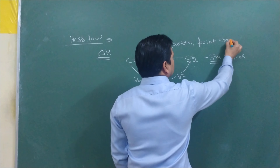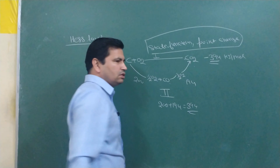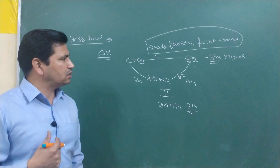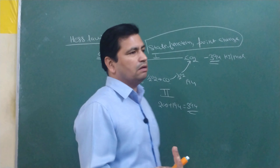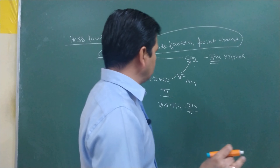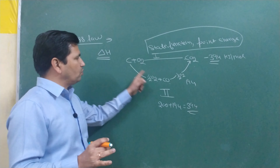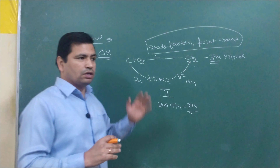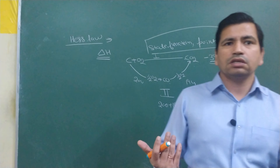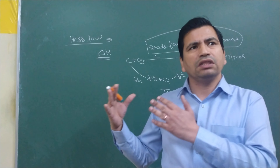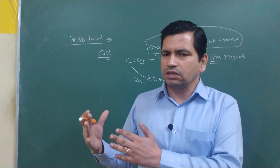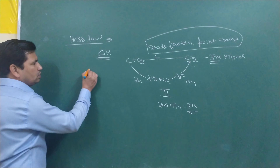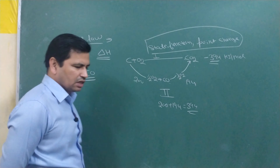There is an important application of Hess's Law. Some substances' enthalpy of formation cannot be measured directly by experiment. CO (carbon monoxide) is one such example. The enthalpy of formation of CO cannot be found experimentally, but using Hess's Law we can calculate it.